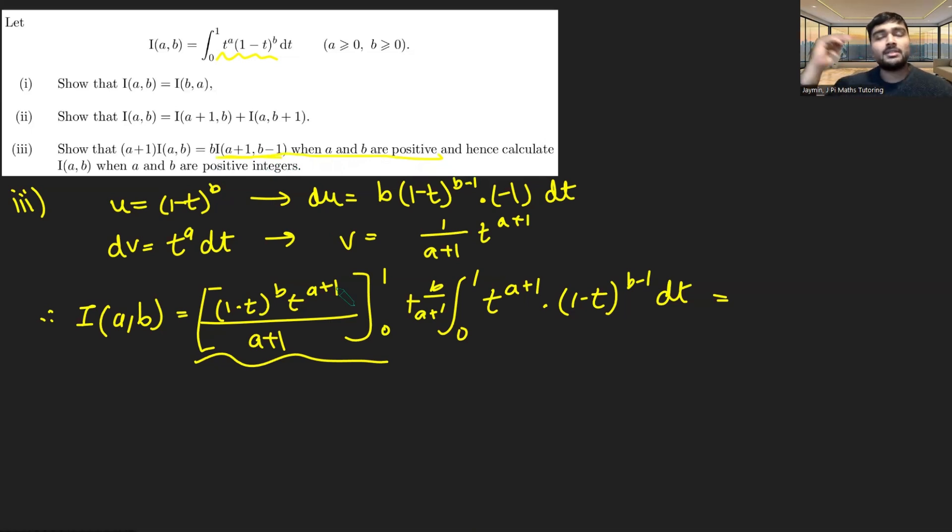So if I do 0 to a positive power, no matter what that power is, it will always be 0. So this square bracket will be 0 minus 0, and this thing in the integral, well that's just simply I(a+1,b-1). So this will be b over a+1, I(a+1,b-1), like so.